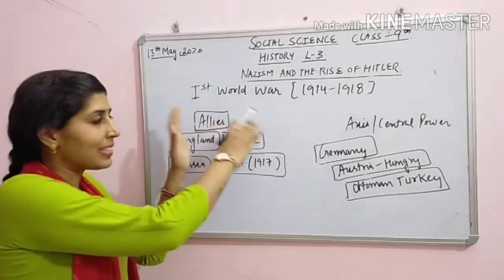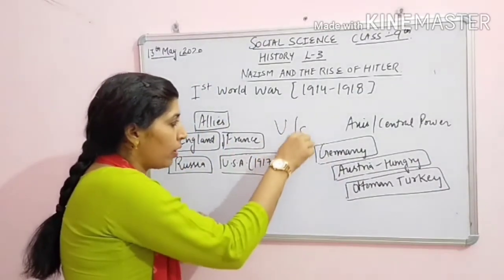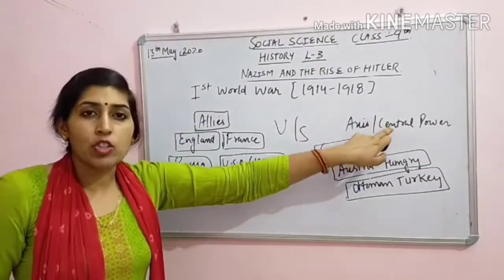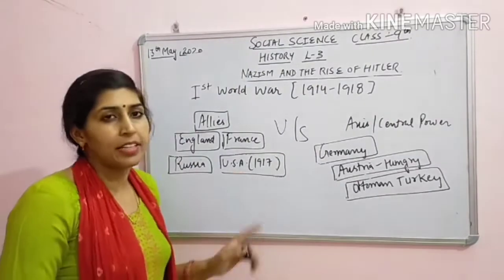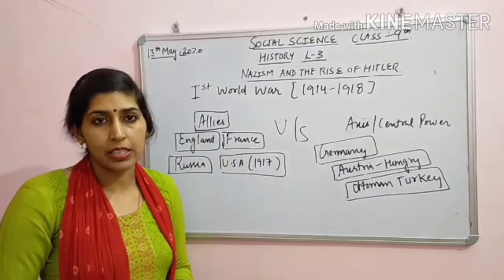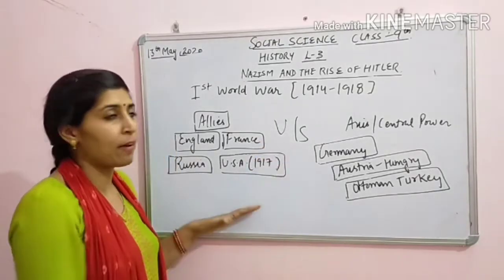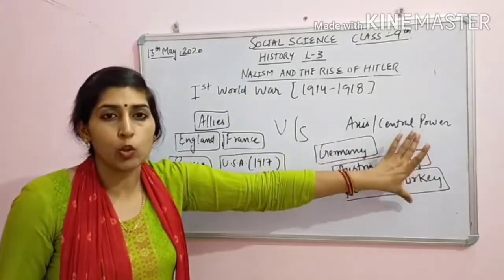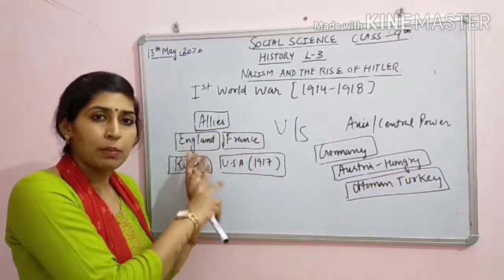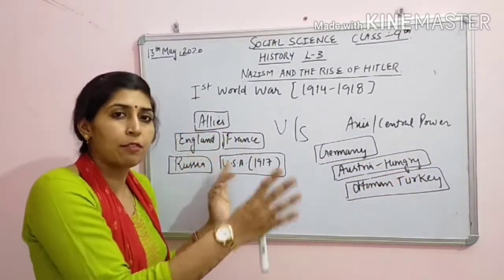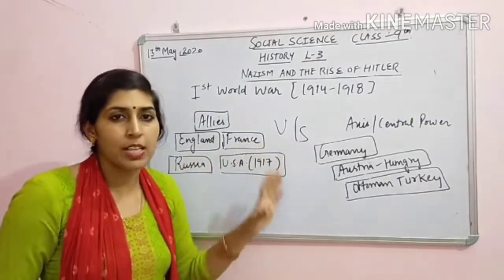Toh allies and axis dono ke beech mein war hota hai. Aur war jeetnay wale hain central power. Lekin beech mein 1917 mein USA entry kar jata hai, aur USA ke entry karne se yeh jo allied group hai, yeh zyada powerful ban jata hai. Yeh central power haar jata hai - vohi same story ki allied power hai Second World War mein bhi jeete the, aur First World War mein bhi yeh jeet gayi hain.